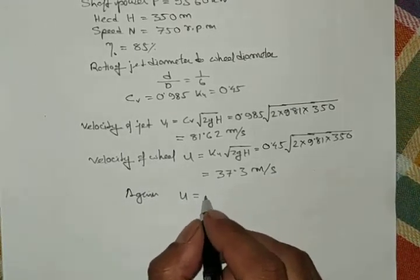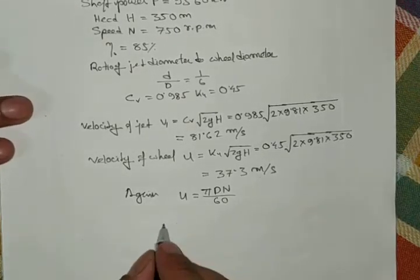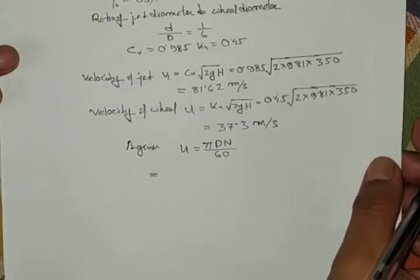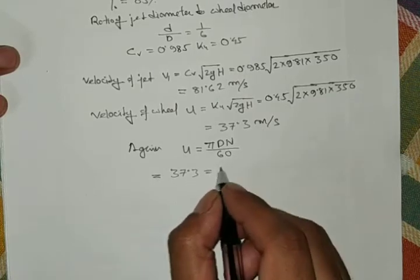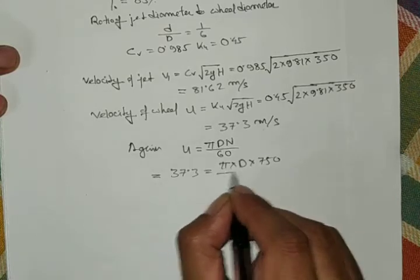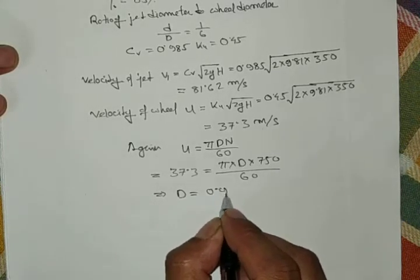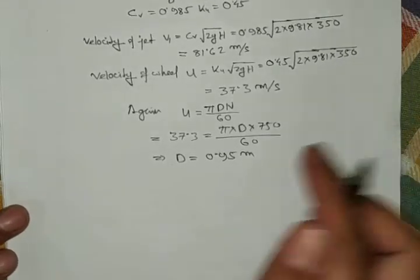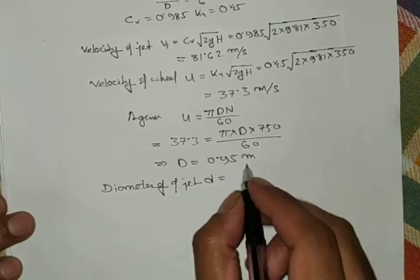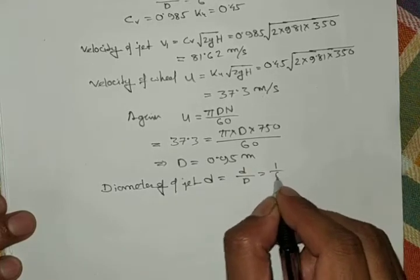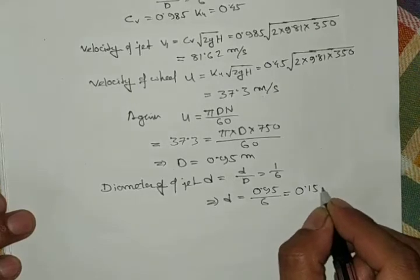Using u = πDN/60, we get 37.3 = π × D × 750 / 60, giving D = 0.95 m (wheel diameter). Since the jet diameter d ≤ D/6, jet diameter d = 0.95/6 = 0.158 m.